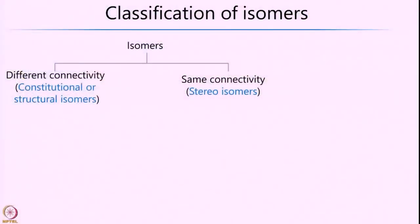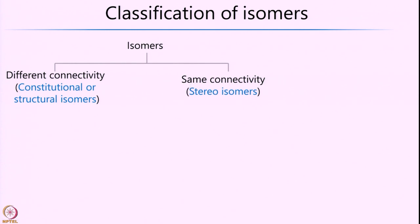I hope this at least gives you an idea of the importance of isomers — it is not just academic, it has relevance in our day-to-day life. So, isomers are compounds defined as having a similar empirical formula but different chemical as well as physical properties. These can be further subdivided into two categories: first, constitutional or structural isomers, where the atoms are connected in a different manner between the two molecules being compared.